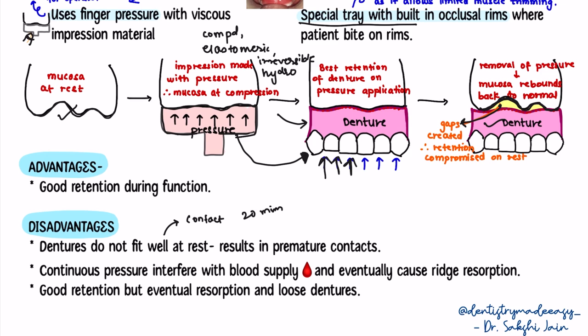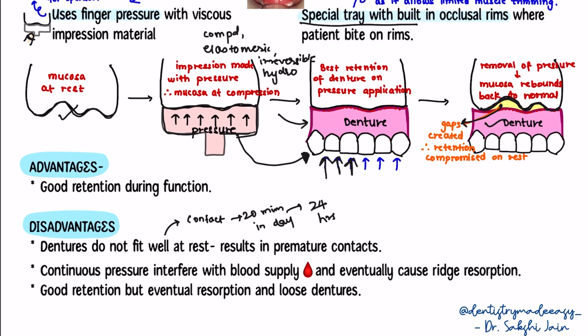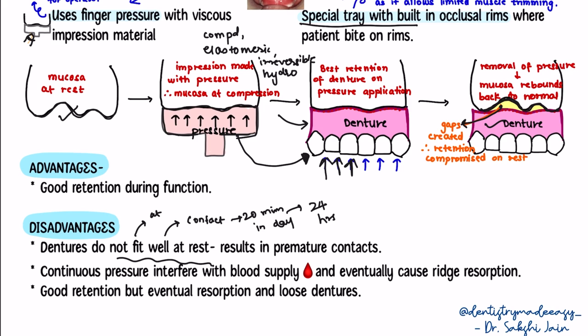It is important to note that tooth contact is usually present for only 17 to 20 minutes out of 24 hours. So dislodging forces are applied at rest for the majority of the day, and forces are also applied to the bone. While the denture fits well during mastication, it will lift the denture at rest leading to premature contacts of the teeth. Additionally, continuous pressure applied by the denture on the tissue will interfere with blood supply, leading to ridge resorption of the residual ridge.